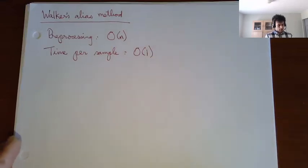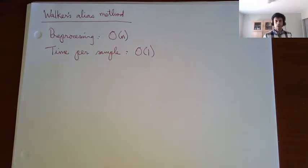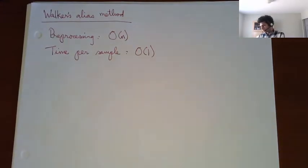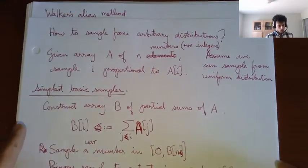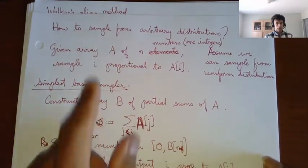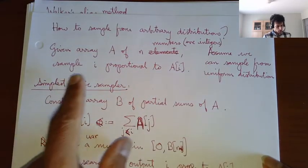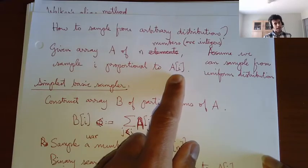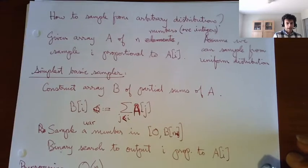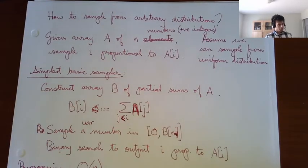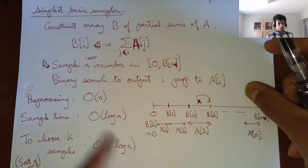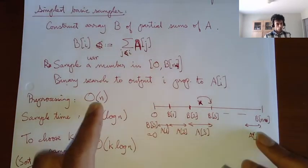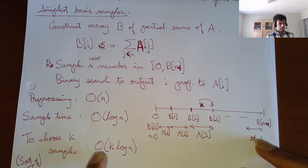What I wanted to talk about in this lecture: since last time I talked about Walker's alias method and just started the discussion, let me revisit the problem. Remember that a lot of what we were doing in importance sampling was to sample from an arbitrary distribution. Given an array of n positive integers, you had to sample i proportional to a_i. The basic samplers were just doing binary search on partial sums, giving O(n) preprocessing and O(log n) per sample, so to generate k samples you need k log n.